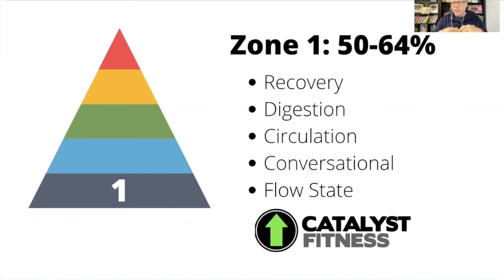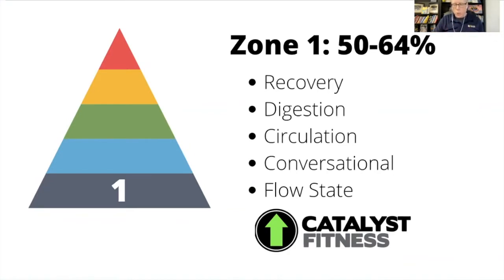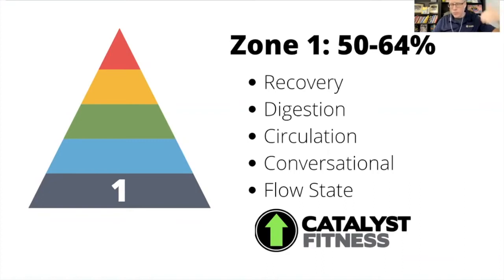At different levels of heart rate you make metabolic changes in your body and get different benefits from different types of exercise according to what your heart is doing. When the demand on your heart is higher, you metabolize energy differently — you'll use carbs more than fats, for example.